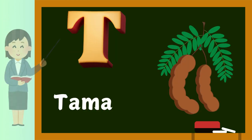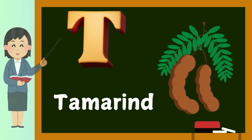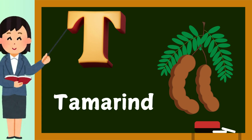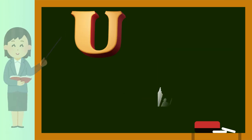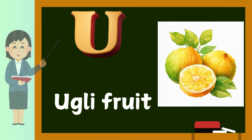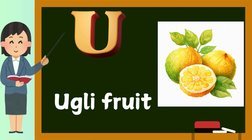T. T is for tamarind. U. U is for ugly fruit.